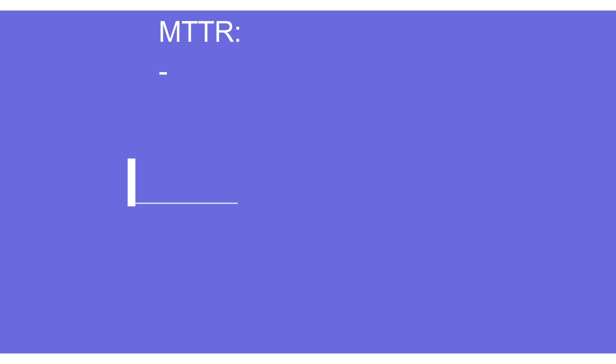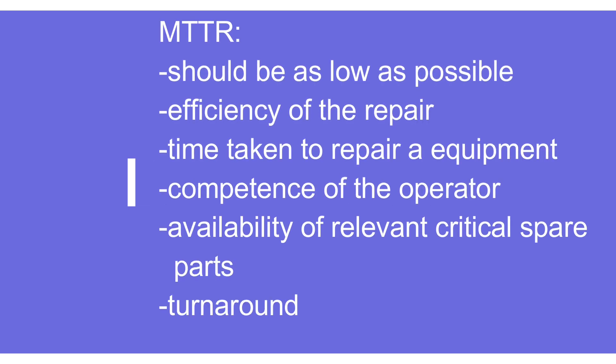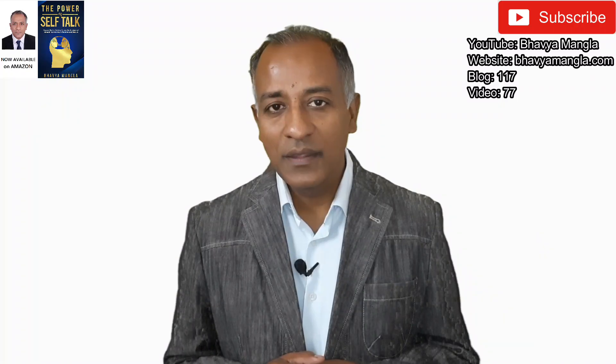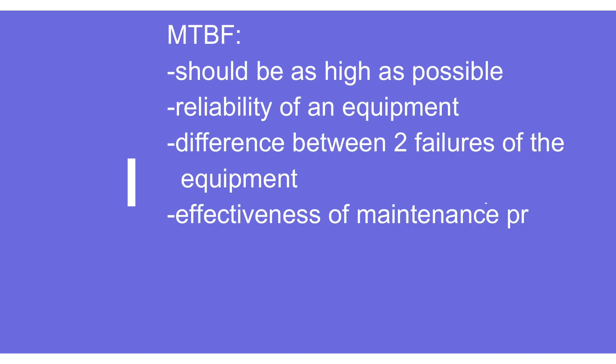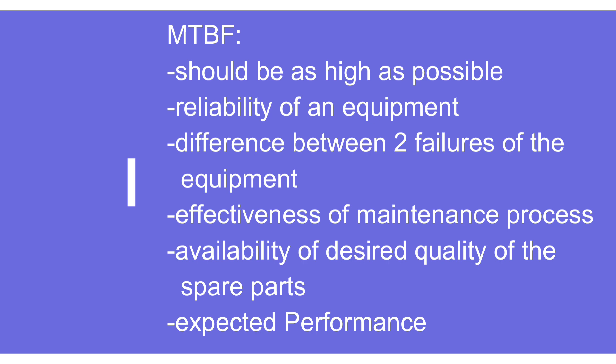In summary: MTTR should be as low as possible. It measures the efficiency of the repair process, reflects the time taken to repair equipment, indicates the competence of the operator, and speaks to the availability of critical spare parts and turnaround time. MTBF should be as high as possible. It measures the reliability of the equipment, represents the time between two failures, reflects how effective the overall maintenance process is, indicates the quality of spare parts being used, and is an indicator of expected performance.